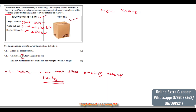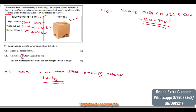Now we calculate the volume: length × width × height = 0.34 × 0.325 × 0.18. If we plug this into our calculator we get 0.01989 cubic meters. That would be our answer.